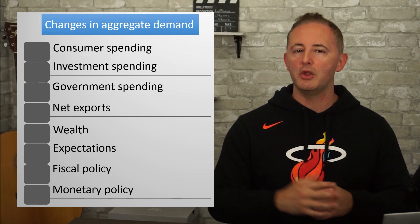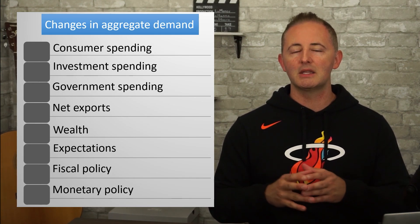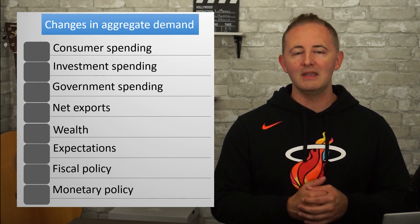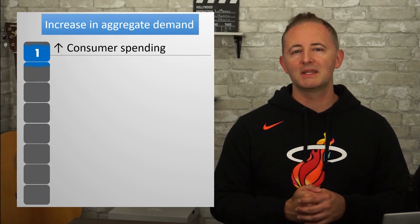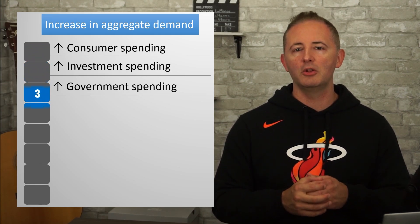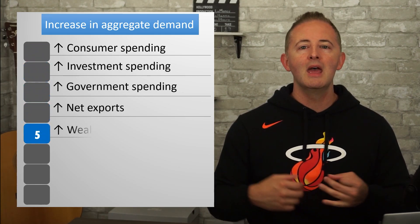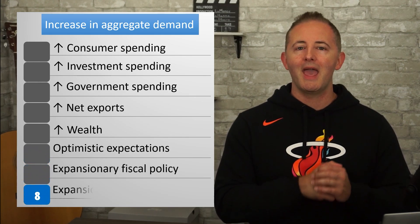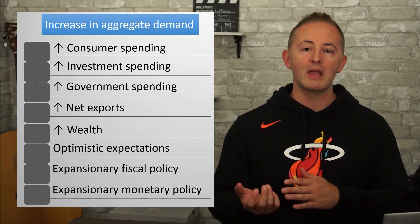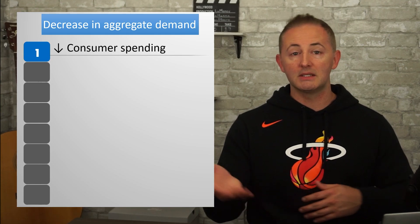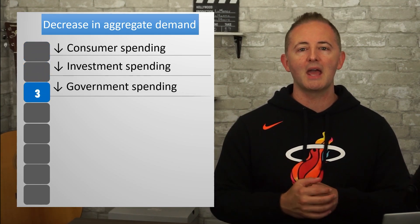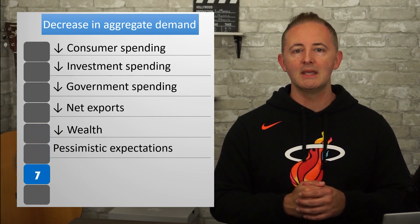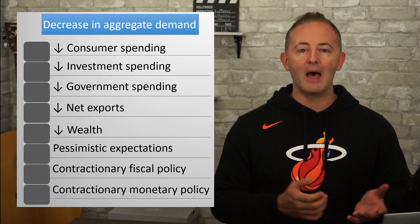Government policies matter as well. Fiscal policy is the term for government tax and spending policies, and these affect AD. Expansionary fiscal policy is designed to increase AD and includes increases in government spending, tax cuts, and increases in government transfers — each of these shifts AD to the right. The opposite policies — cutting government spending, raising taxes, and reducing transfers — are called contractionary fiscal policy, and these all shift AD to the left.